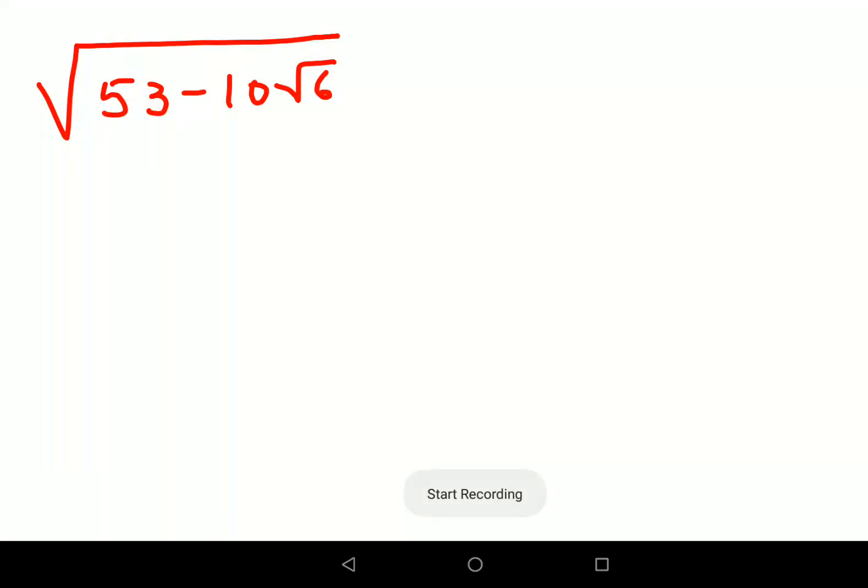Welcome everyone, so today we are going to solve a Cambridge interview question and trust me this was very difficult to crack. Here what they have given us is that we have a root, and then we have 53 minus 10 root 6.